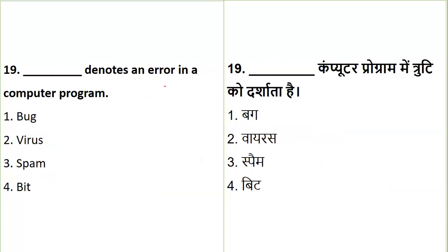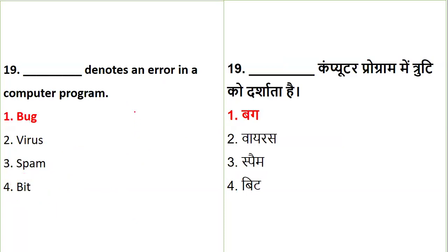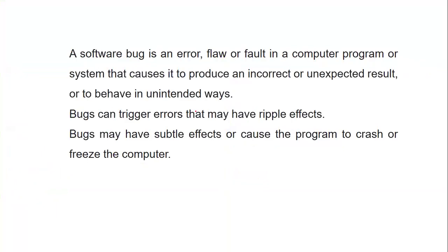The next question asks what denotes an error in a computer program. The options are bug, virus, spam, or bit. A bit refers to memory, not an error. The answer is a bug — a software bug is an error or fault in a computer program that can result in incorrect or unexpected results, and can cause effects such as freezing or crashing the computer.